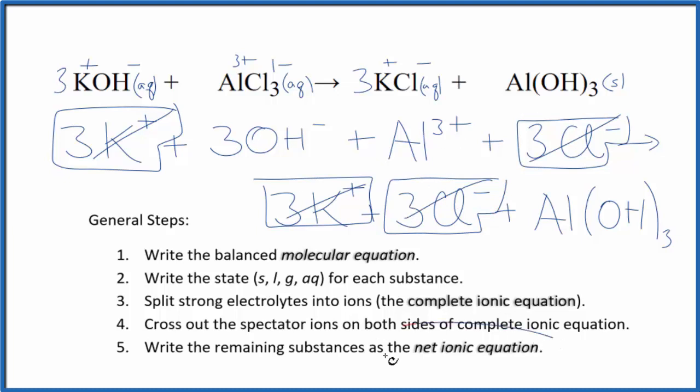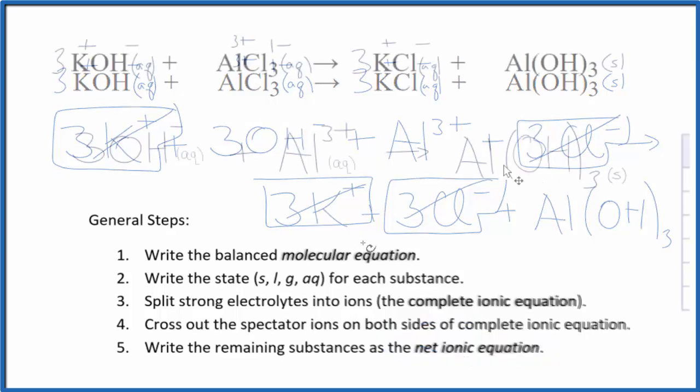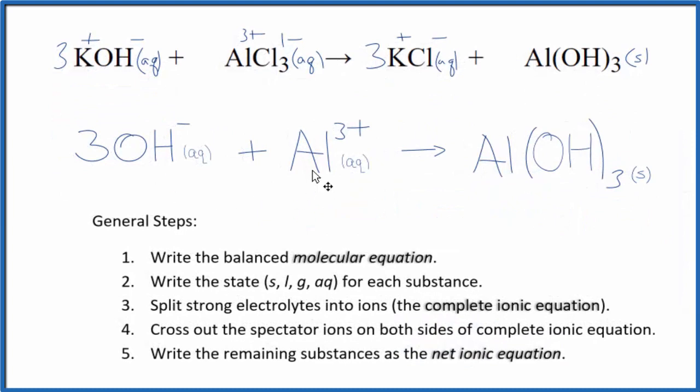But everything that's left gives us the net ionic equation for KOH plus AlCl3. I'll clean it up, write the states. And this is the balanced net ionic equation for potassium hydroxide plus aluminum chloride. You'll note that charge is conserved. We have three times the one minus. That's three minus, three minus, and three plus. That gives us a net charge of zero. And this is a neutral compound, net charge of zero over here. If you count the atoms up, they're balanced as well.